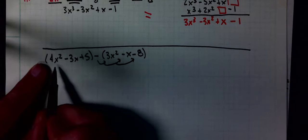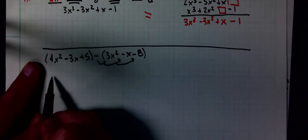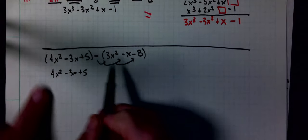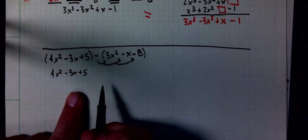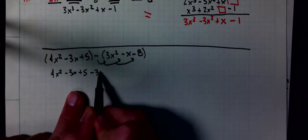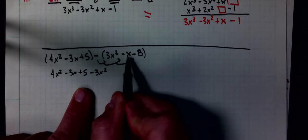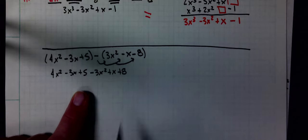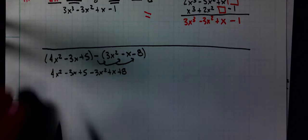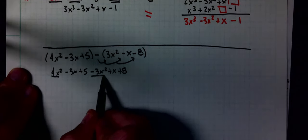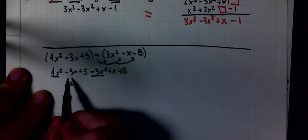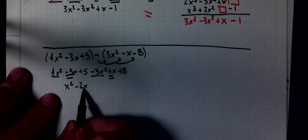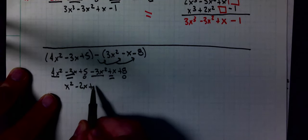For the horizontal method, I'm going to copy the left-hand side, 4x² minus 3x plus 5. I'm going to change the sign of everything on the right-hand side. Negative of a negative is a positive. Combine like terms. 4 minus 3x². Negative 3x plus x. 5 plus 8 is 13.